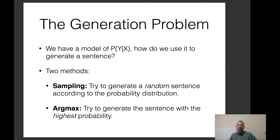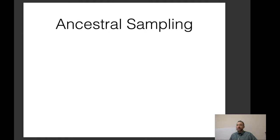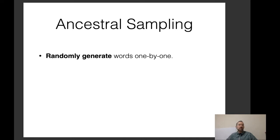We have a whole class on generation methods later, so I'll go over the simplest ones now. Why would we want to do sampling in the first place? The basic idea is we want to know what the model thinks is a plausible sentence. Another reason is that we might want non-deterministic outputs — for example, in a dialogue system talking with the same user repeatedly, we don't always want it to say the same thing.